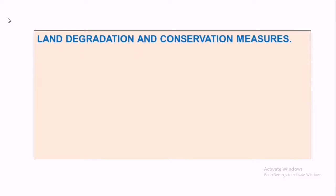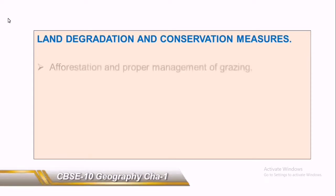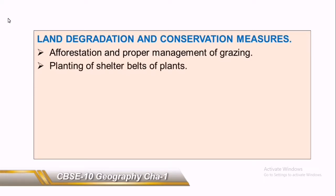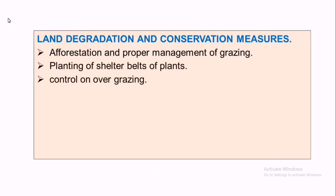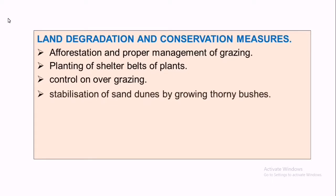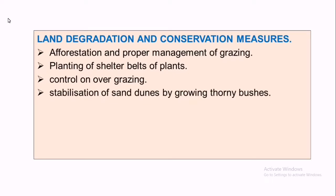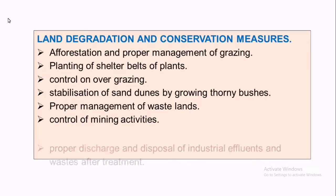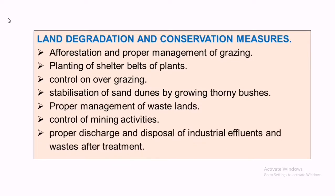What are the steps for land degradation and conservation? They include afforestation, proper management of grazing, planting of shelter belts, control of overgrazing, stabilization of sand dunes by growing thorny bushes, proper management of wastelands, control of mining activities, and proper discharge and disposal of industrial waste.